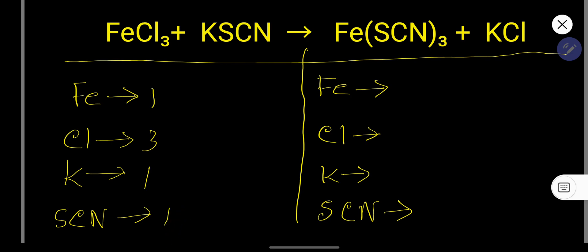In the right hand side iron is 1, SCN thiocyanate is 3, and potassium is 1, and chlorine is 1. So now balance.